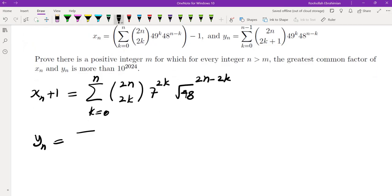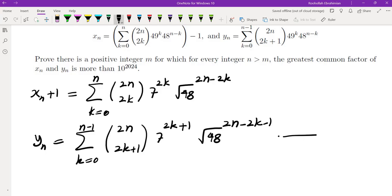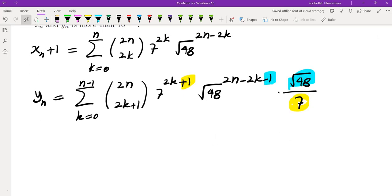Yn can be written as the sum from k equals 0 to n minus 1 of 2n choose 2k plus 1. Conveniently, both are binomial coefficients of 2n. This one is 7 to the power of 2k, and I would like this to be 2k plus 1, and then root 48 to the power of 2n minus 2k minus 1. I'll have to divide by 7 and multiply by root 48 to adjust the exponents. Now we get something very similar to binomial expansion.